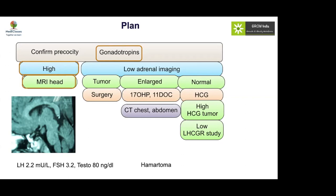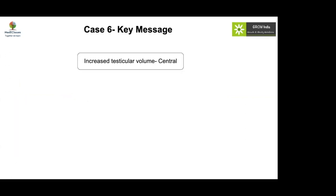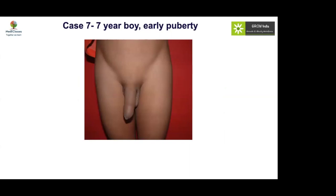Key messages: trauma, tumor, and abuse must always be considered. Increased testicular volume points to central precocious puberty — perform MRI in all such cases. Importantly: if puberty is early in boys, it is always pathological; if delayed in boys, it is mostly physiological. Conversely, if puberty is early in girls, it is mostly physiological; if delayed in girls, it is likely pathological.